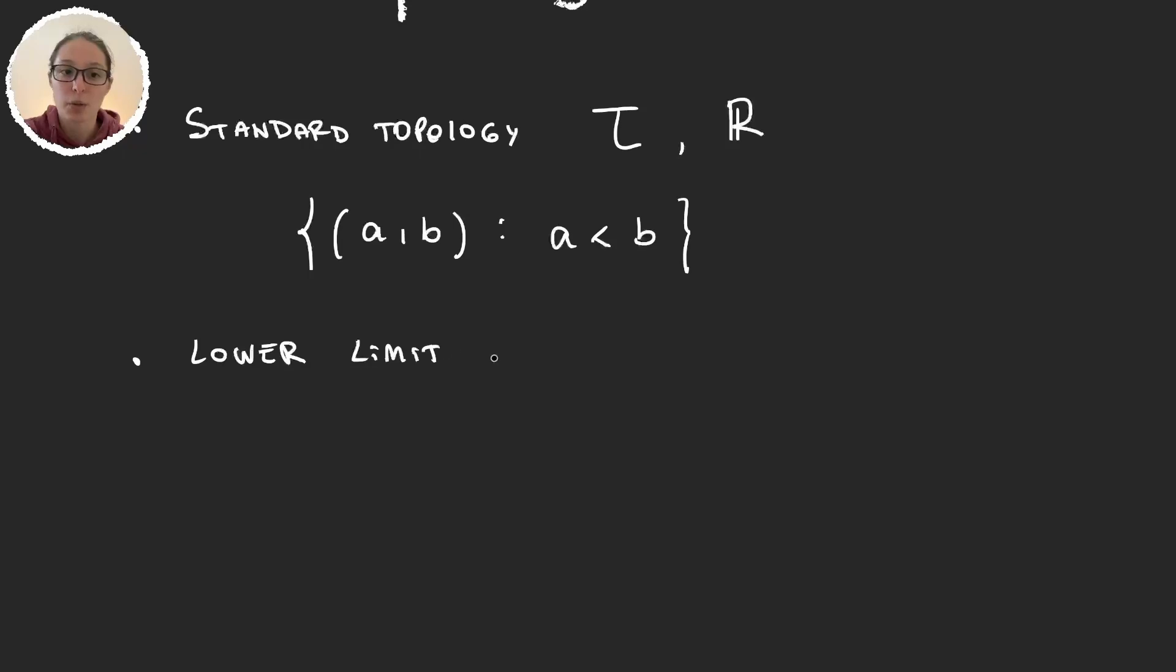The second topology is the lower limit topology. We will denote the topology by τ_l, and when we say the real numbers with the lower limit topology we will say ℝ_l. And it's the one generated by the basis of intervals for which the left extreme is closed, so [a,b) where obviously a is smaller than b.